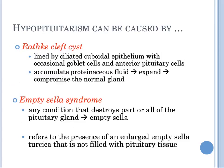Rathke cleft cyst is lined by ciliated cuboidal epithelium with occasional goblet cells and anterior pituitary cells. This cyst can accumulate proteinaceous fluid and expand, compromising the normal gland and causing hypopituitarism. Empty sella syndrome refers to the presence of an enlarged empty sella turcica not filled with pituitary tissue. This can result from any condition or treatment that destroys part or all of the pituitary, such as ablation by surgery or radiation.